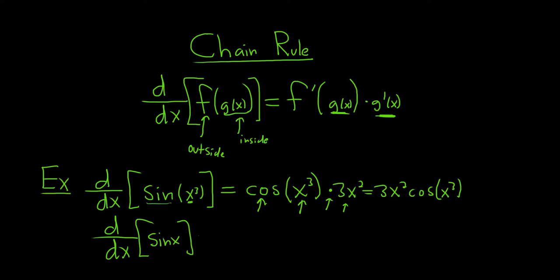Let's backtrack and try sine x — we know the answer is cosine x, but let's be silly and use the chain rule. The inside function is x, so we leave it untouched. The derivative of the outside is cosine of x evaluated at the inside, times the derivative of the inside. Well, the derivative of x is 1, so this is just cosine x. It agrees with our formula, so life is good.